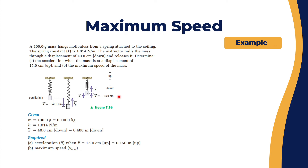Let's take an example. A 100-gram mass hangs motionless from a spring attached to the ceiling. The spring constant is 1.014 newtons per meter. The mass is pulled through a displacement of 40 centimeters down and released. Find the acceleration when the mass is at a displacement of 15 centimeters up, and find the maximum speed of that mass.